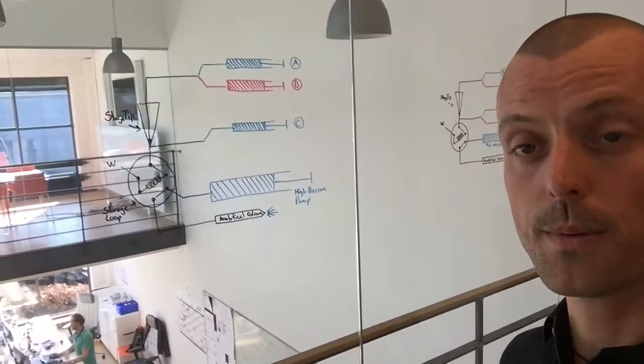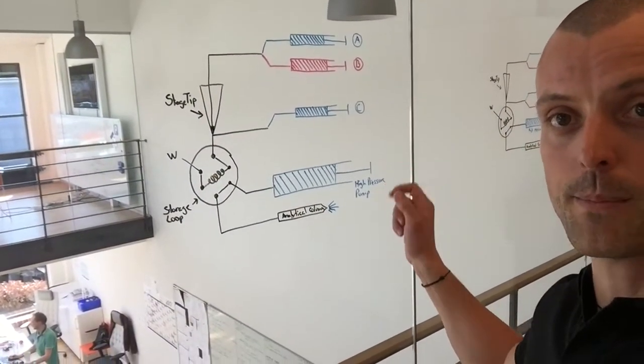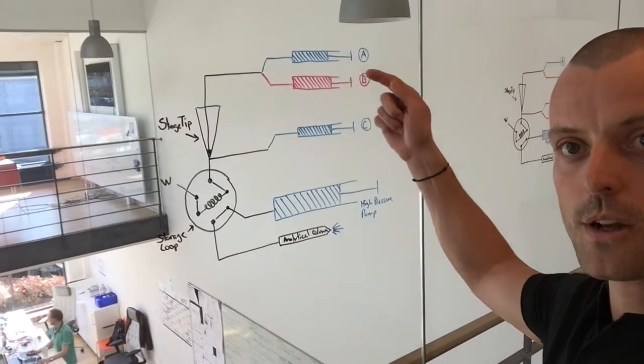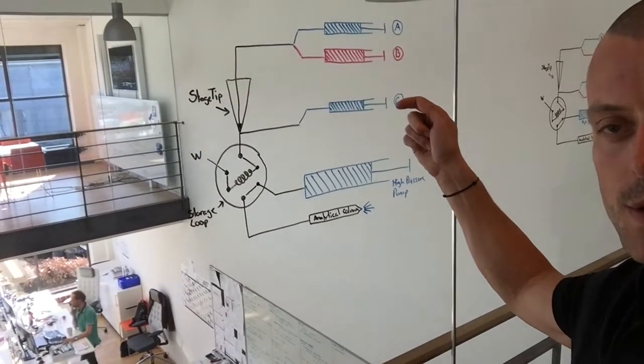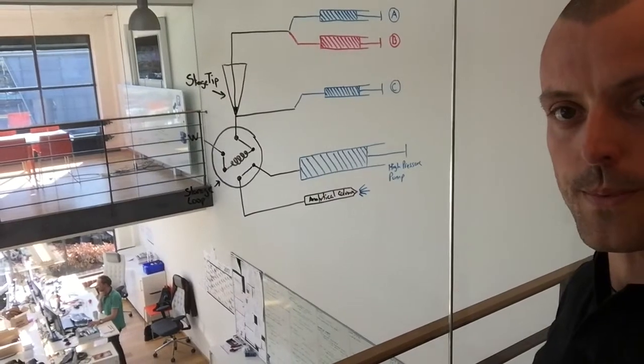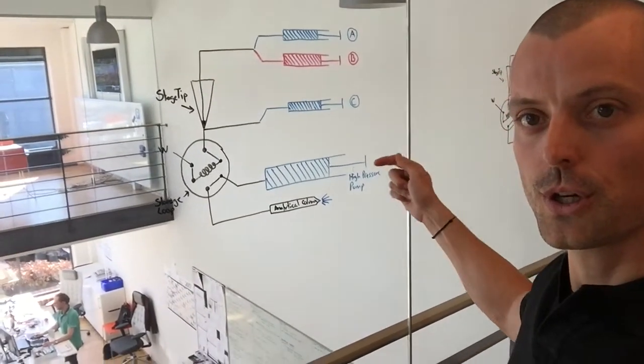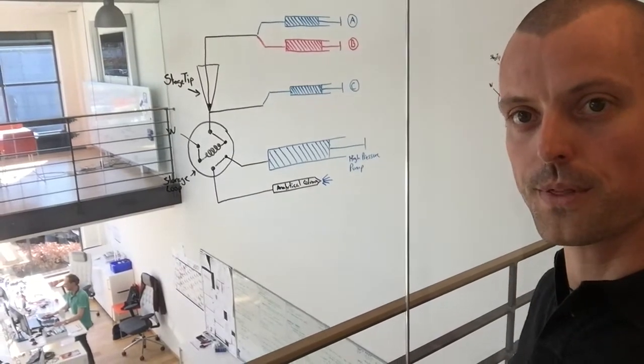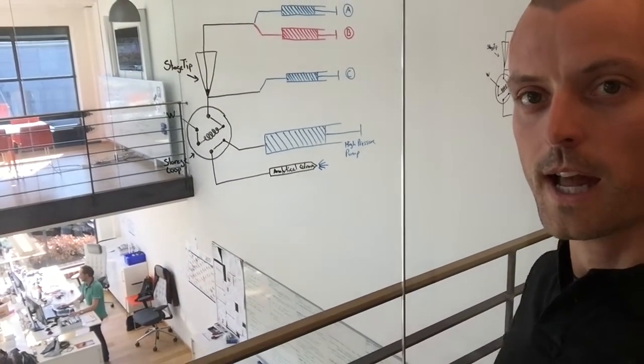In the first mockup we have more or less built the same design, however we don't have the D-Pump. So this allows us now to run a low pressure gradient through the stage tip. We can then dilute it slightly using the C-Pump before we put it into the storage loop. We can then use the high pressure pump to push the preformed gradient with the embedded analytes forward onto the analytical column and then into either a mass spectrometer or a UV detector.